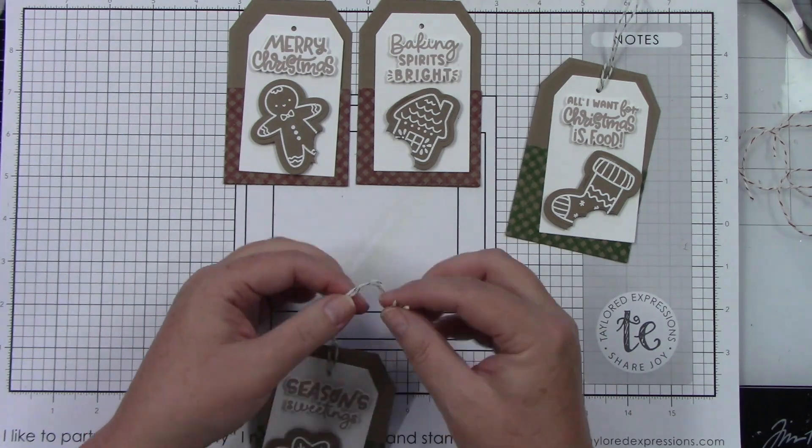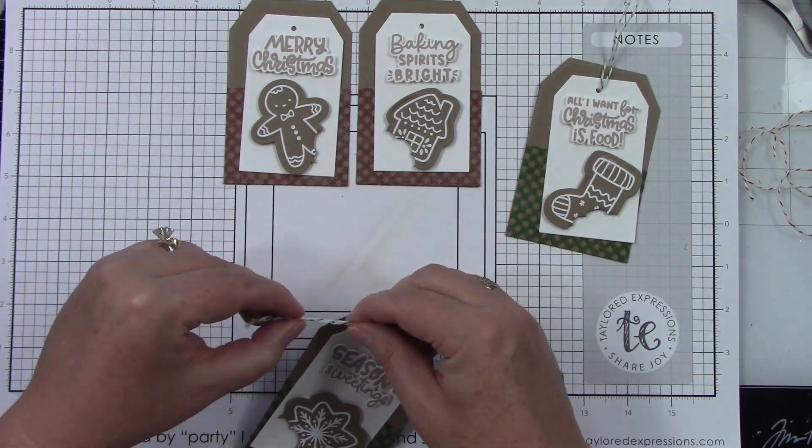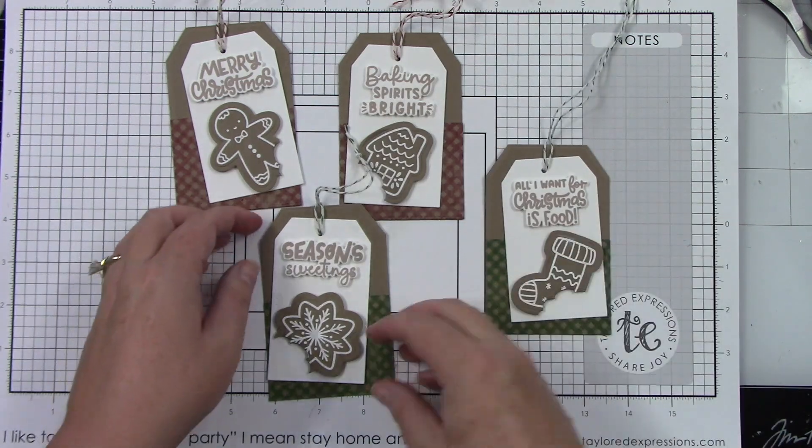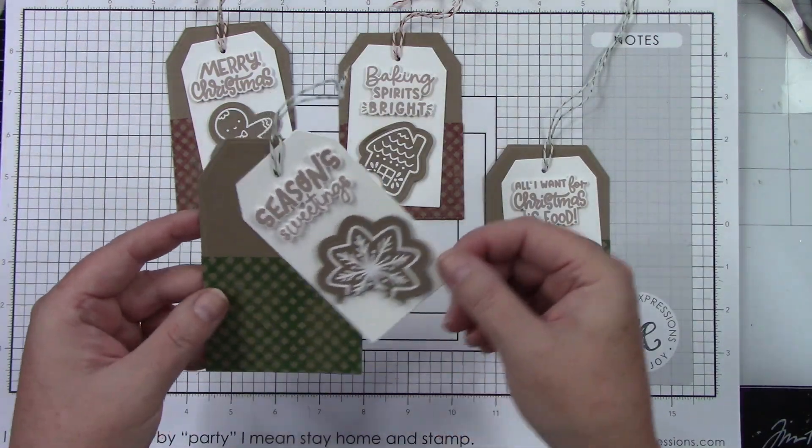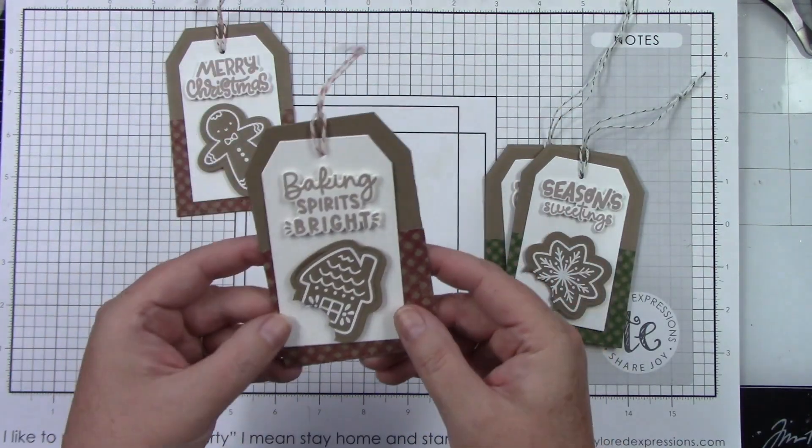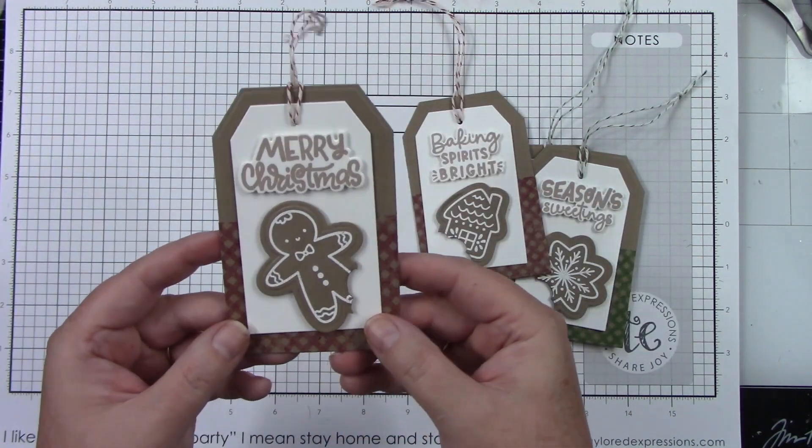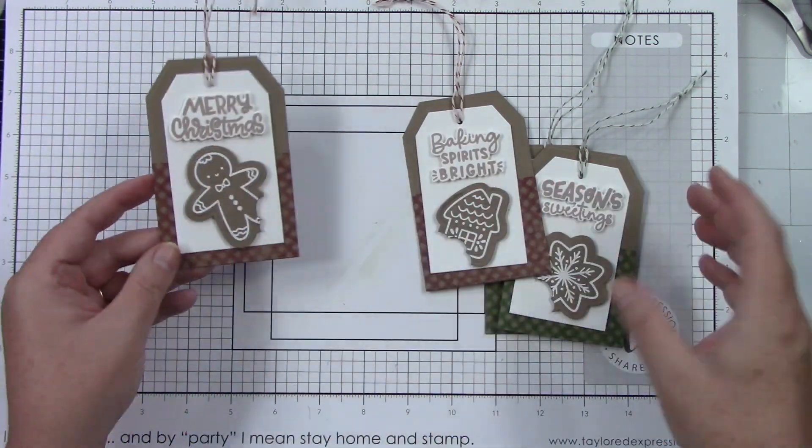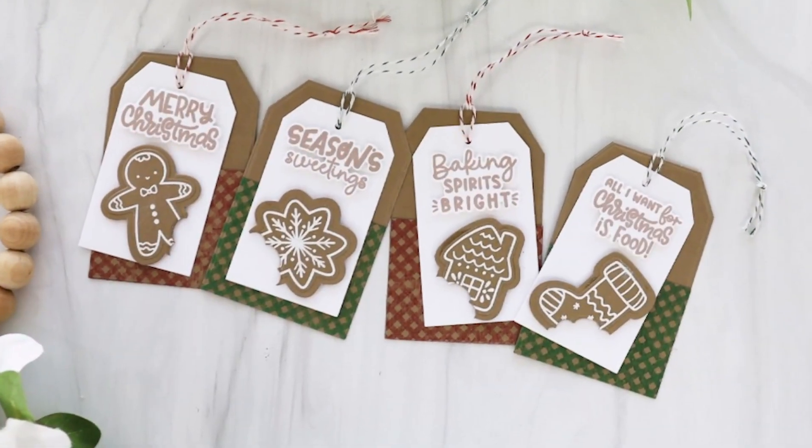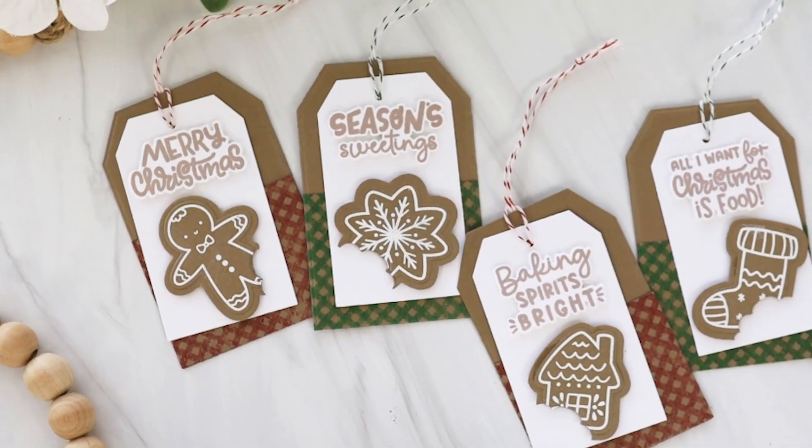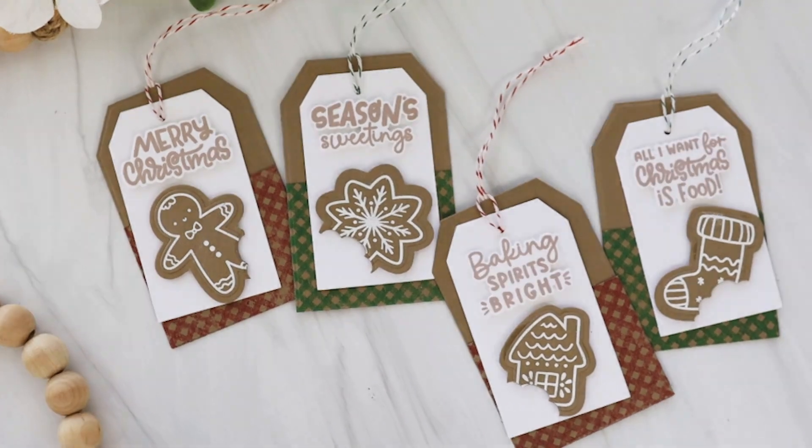Let's take a look at these up close. Aren't these so darling? These are perfect to add to your little treats that you might give to your neighbors at the holiday time - so simple, so quick and easy to make, but they are darling. You can write your to and from on the back. I just think they turned out so cute. Thank you guys so very much for stopping by and watching. You can find all of these products at the Taylored Expressions web store at tayloredexpressions.com.